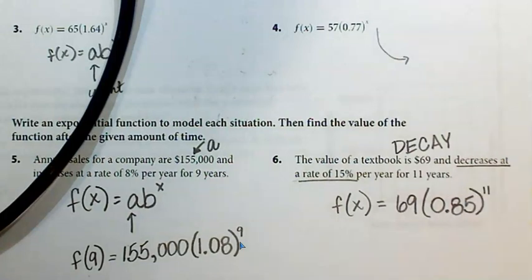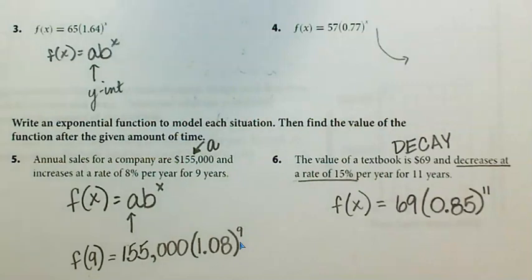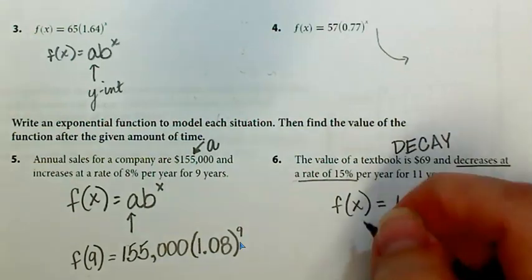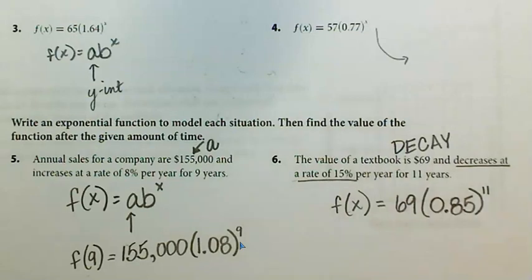All right, so there's your equation. You can put that equation in, f(x) would literally be f(11), what's the value after 11 years, and you can solve that and write it on your sheet.